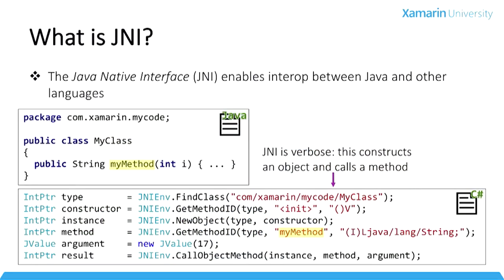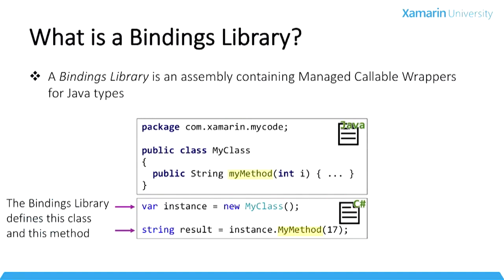Here's an example of JNI. At the top I have some Java code — my class that contains my method. And then at the bottom there are six lines of JNI code that I could use to call that Java code from C#. It's certainly possible to compress that JNI code a little bit; I wrote it out step-by-step so it would be a little more intuitive. But in general it's quite tedious to write JNI code.